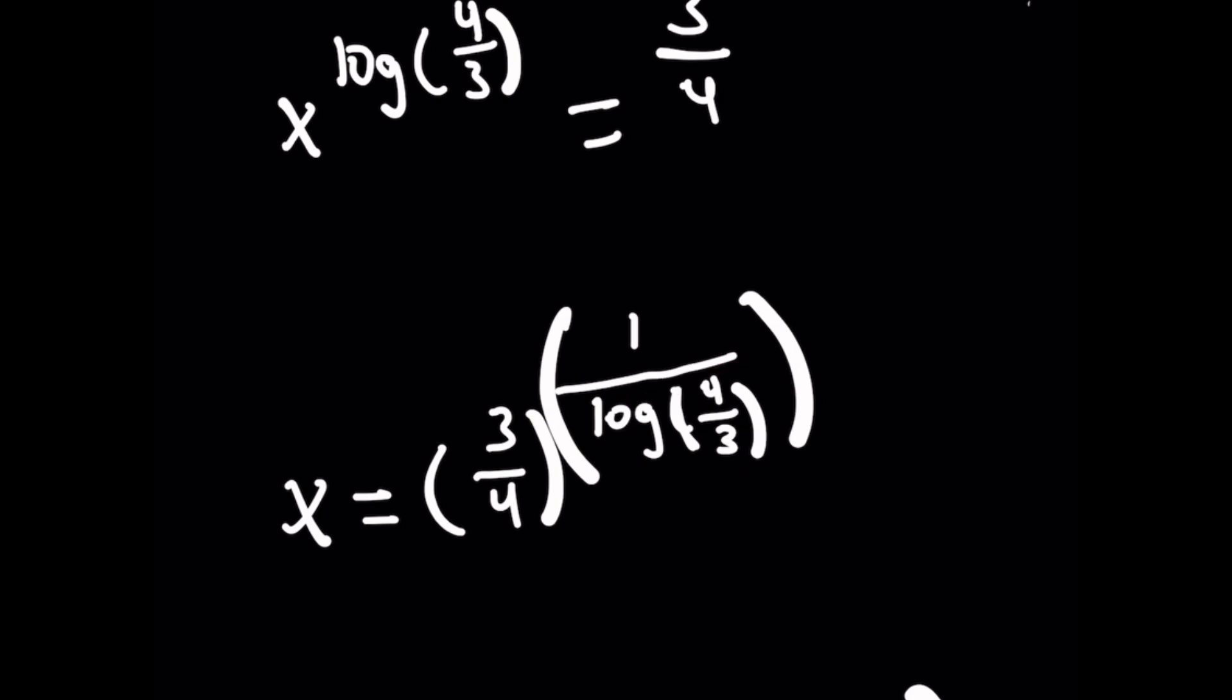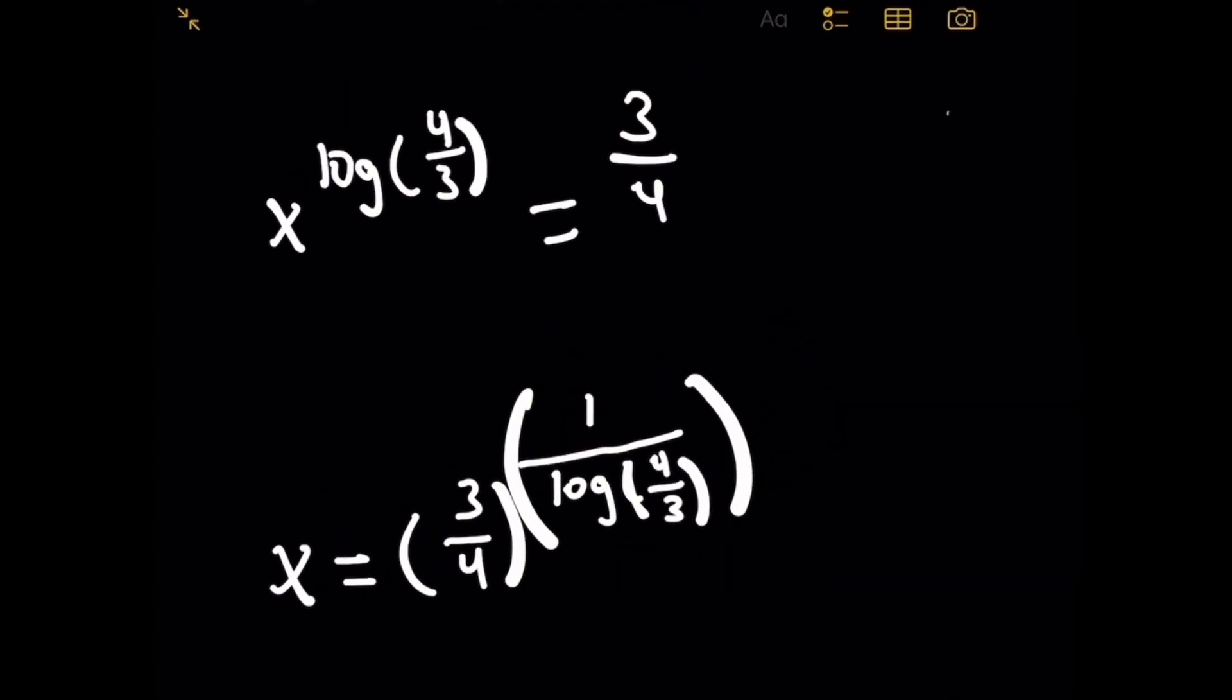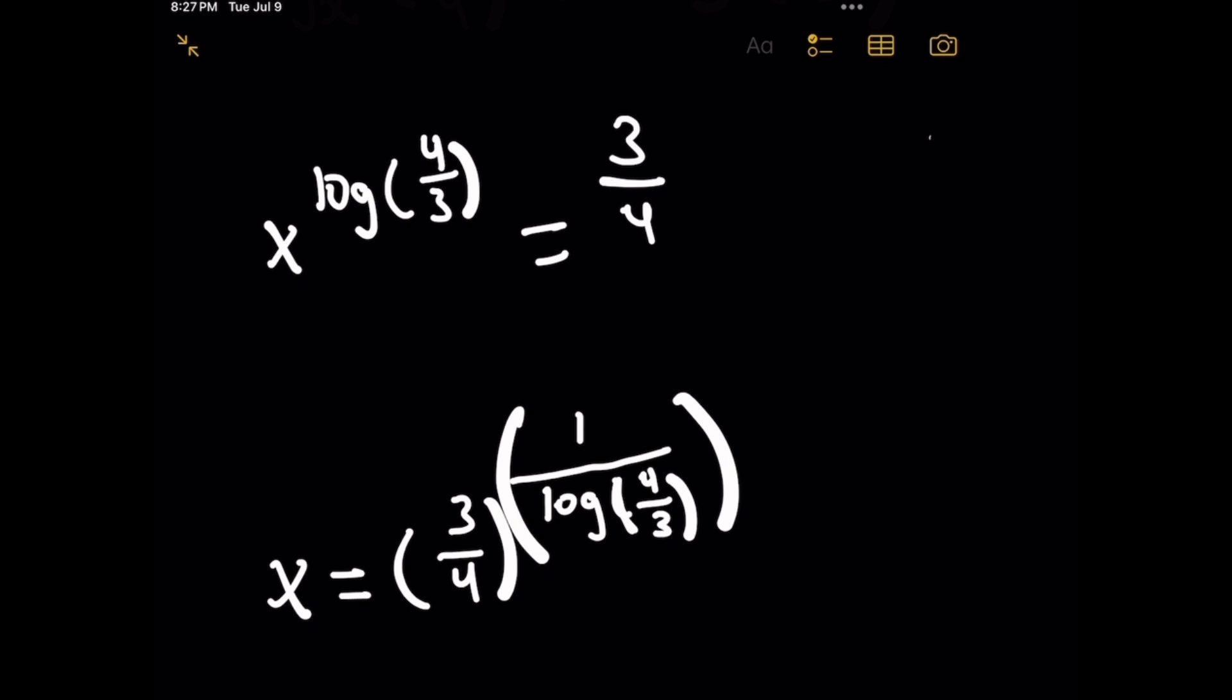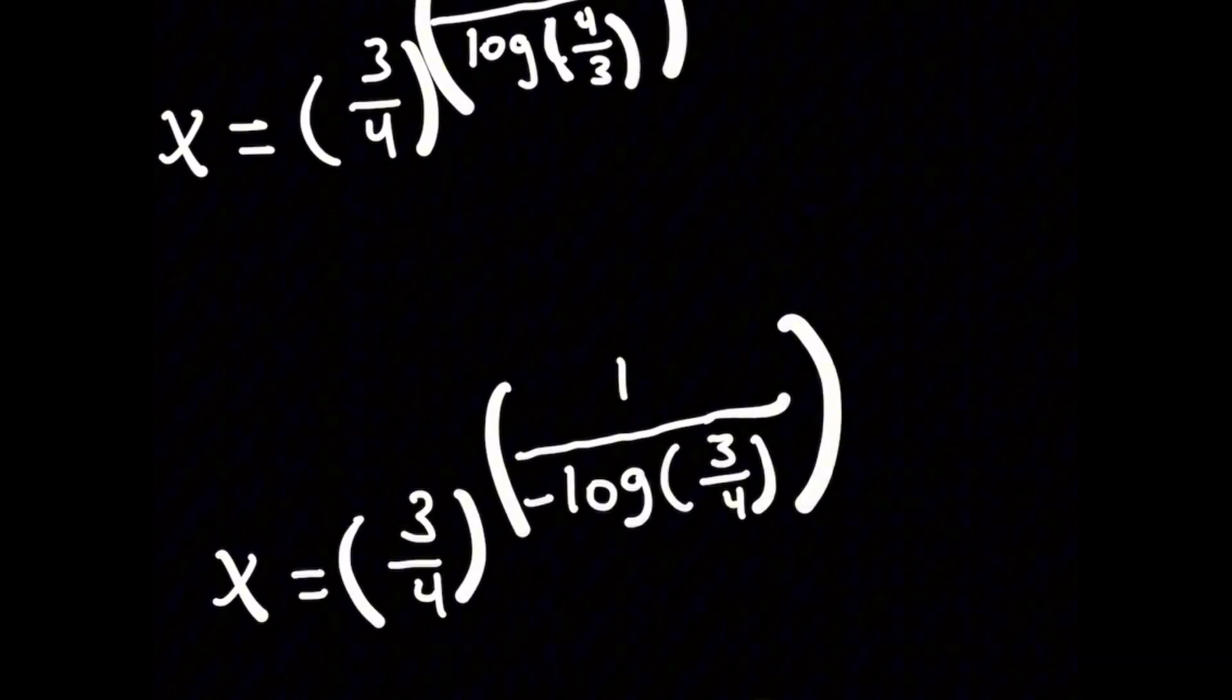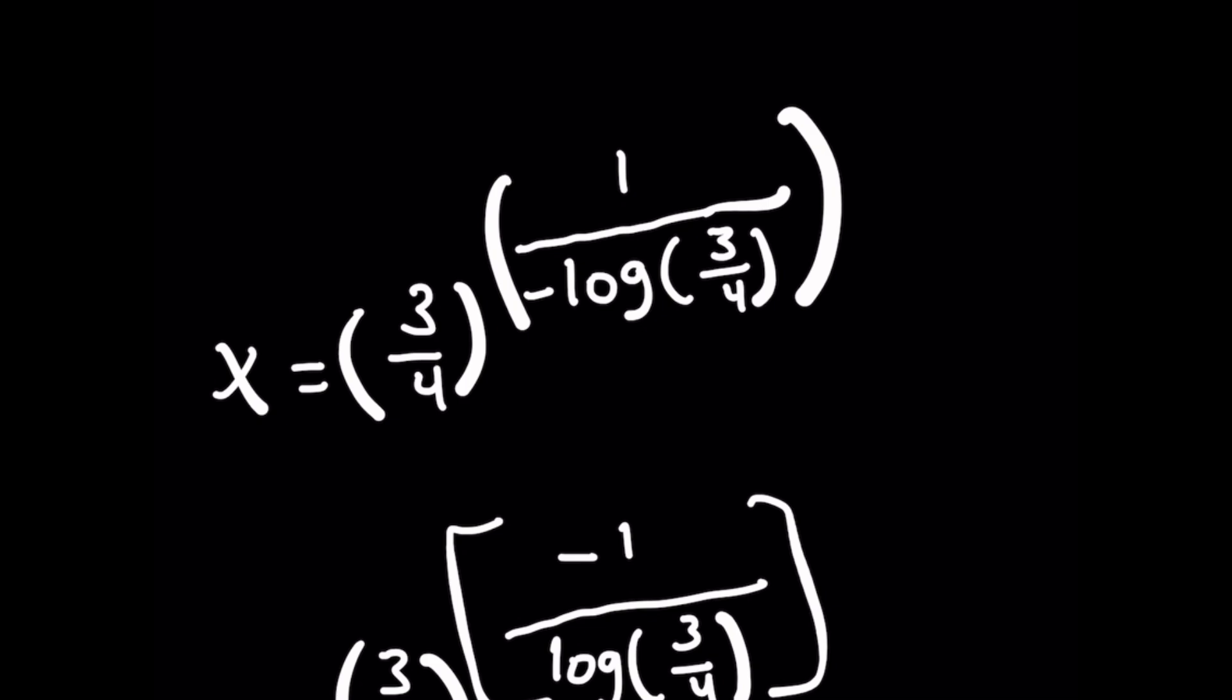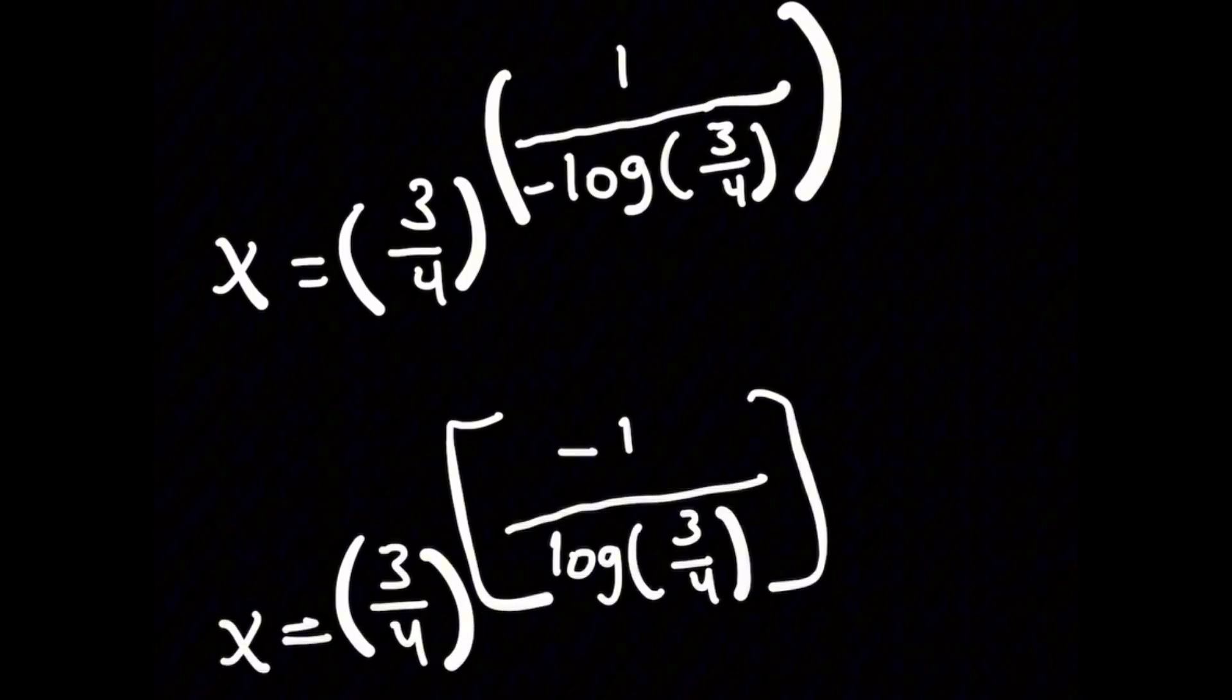Now, remember with logarithms that the log of something where the something on the inside has a power, you can bring that power in front. Instead of log of 4 over 3 on the denominator, we have negative log of 3 over 4. When I move that negative to the numerator, I notice that the base of the power I'm working with is actually known now.